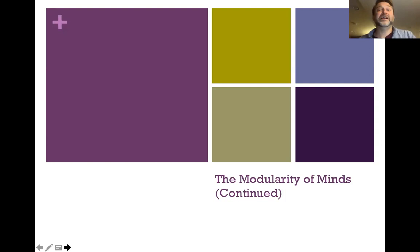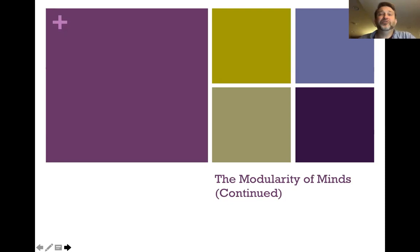We can find out about this information through experimentation, but because the way these modules do their work is informationally encapsulated, we can't just look into them and see what's going on. Similarly, they're not going to be affected by background beliefs, as is shown through the Mueller-Lyer illusion — you may know the two lines are the same length, but you're still going to see one of them, the one with the inward-facing arrowheads, as longer than the other. And mandatoriness is just this idea that if I am presented with a particular stimulus that a particular module responds to, that module will do its work and there's nothing I can do to stop it. If you see a word in your native language, you're going to automatically understand its semantic significance.